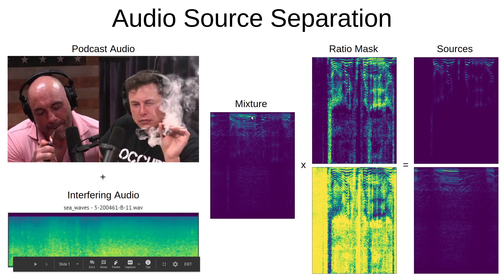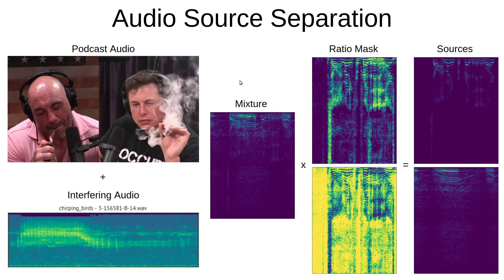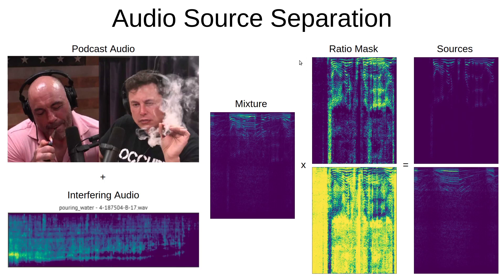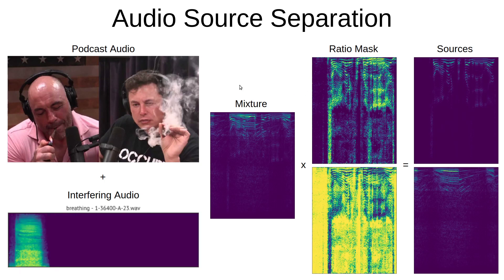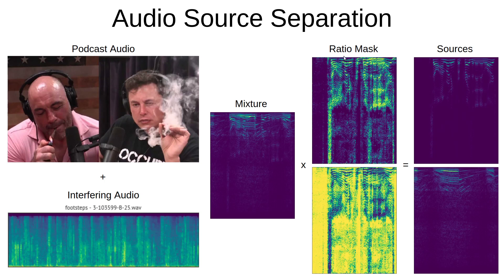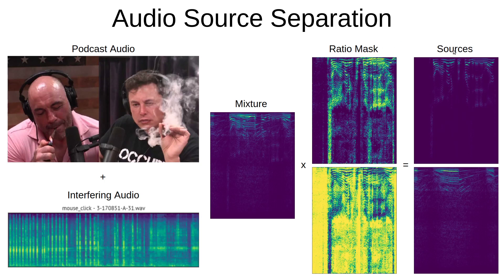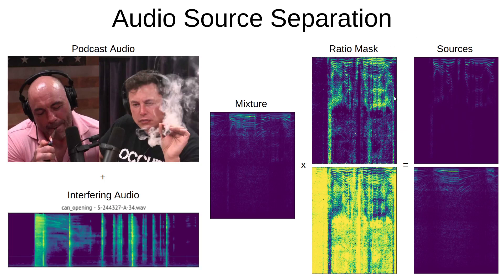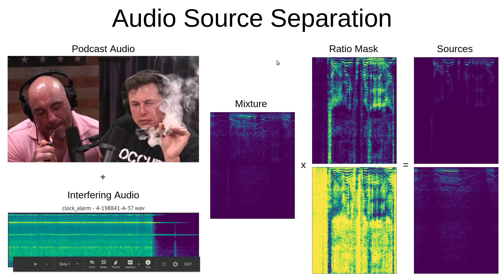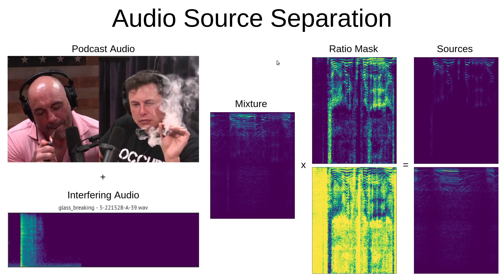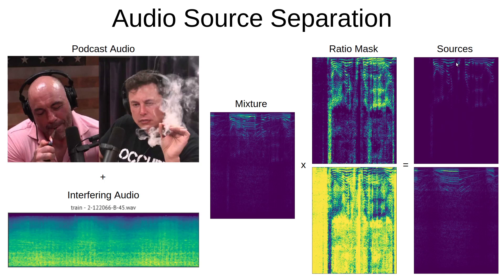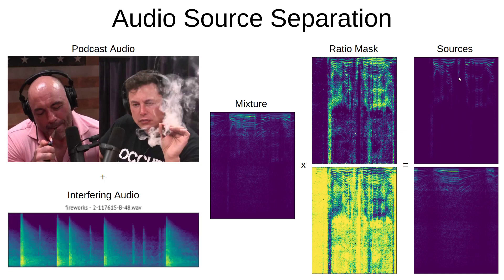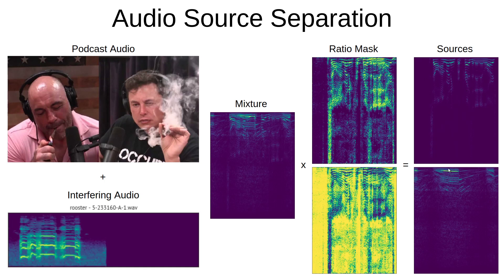Our neural network will be taking in a mixture of audio and producing a ratio mask. The ratio mask is just values from 0 to 1. When we multiply our mixture by a ratio mask, we can actually recover the signal of interest, and we can decompose not only into the podcast audio but also into the interfering audio. What makes this difficult and why we're using a neural network is because it's often the case that we have overlapping frequencies in both our signal of interest and our interferer.